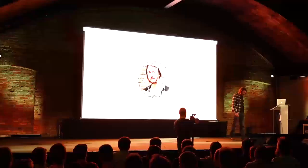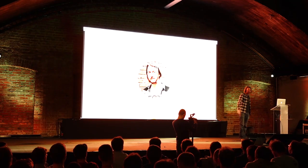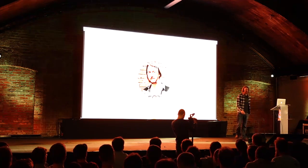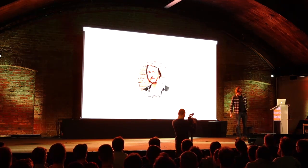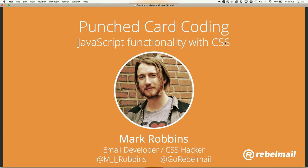I'm Mark Robbins. I'm an email developer, and I'm aware I'm in a room full of web developers talking about HTML email, so don't leave. Follow me online at M underscore J underscore Robbins or at Go Rebel Mail. Rebel Mail is the company I work for, and we do interactive email — that's the only thing we do. We don't do anything static.